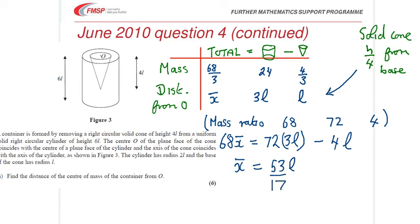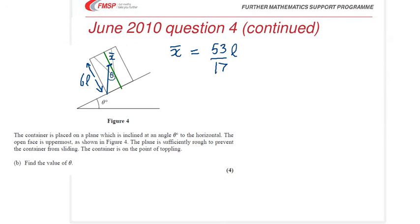So that's the first part done. And the second part of the question has the container resting on a plane. It's a rough plane, which is sufficiently rough to prevent it sliding down the plane. So we're told it's on the point of toppling. Now you know that when an object's on the point of toppling, the weight acts through...